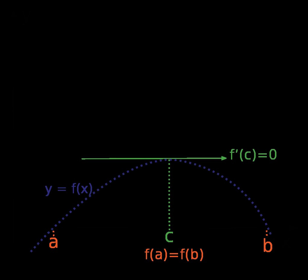In calculus, Rolle's theorem or Rolle's lemma essentially states that any real-valued differentiable function that attains equal values at two distinct points must have at least one stationary point somewhere between them—that is, a point where the first derivative, the slope of the tangent line to the graph of the function, is zero.